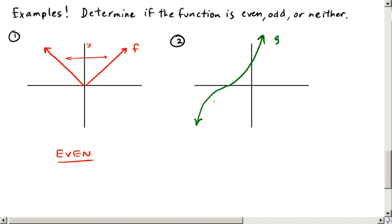if you took a point here, let's just pretend that this point is at 1, 5. You ought to be able to find negative 1, negative 5 on there. And if I do that, it's not on the graph. All right, so again, is there symmetry with respect to the origin? And the answer is not for every point, no. So this one's actually neither.